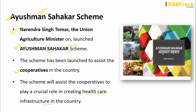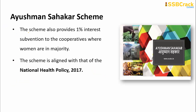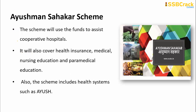The Ayushman Sahakar Scheme was created by the National Cooperative Development Corporation (NCDC), which will provide loans of up to Rs. 10,000 crores to cooperatives under the scheme. It will also strengthen welfare activities for farmers and provides one percent interest subvention to cooperatives where women are in the majority. The scheme is aligned with the National Health Policy of 2017.